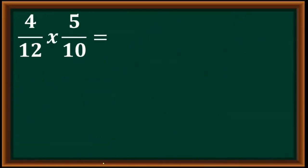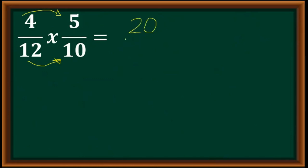Let's proceed now to multiplication. Unlike addition and subtraction — where dissimilar fractions require finding the LCD first — in multiplication we just need to multiply numerator by numerator, and then denominator by denominator. So 4 times 5 is 20, and 12 times 10 is 120.